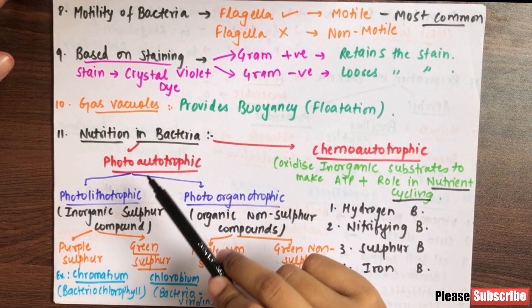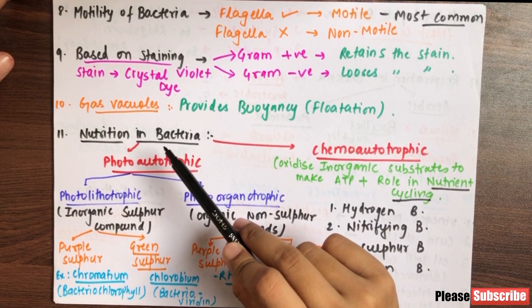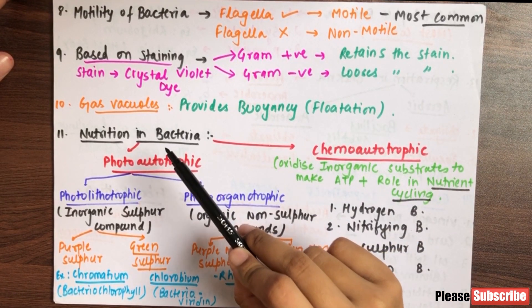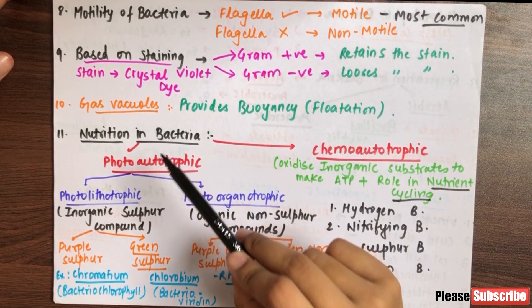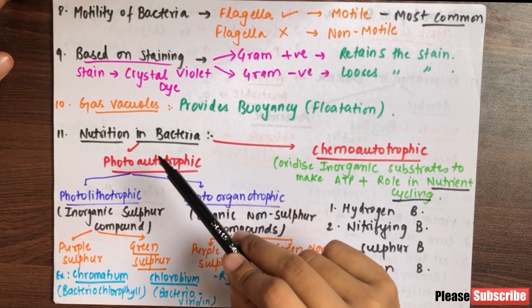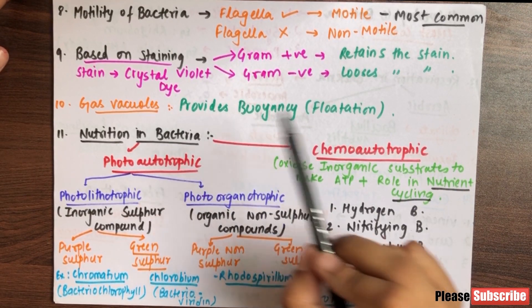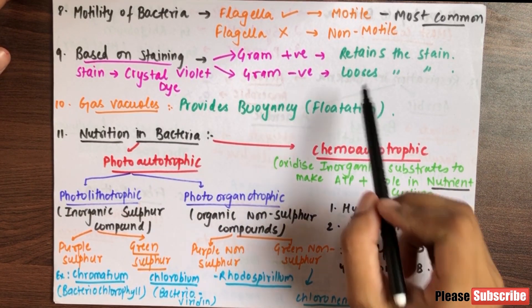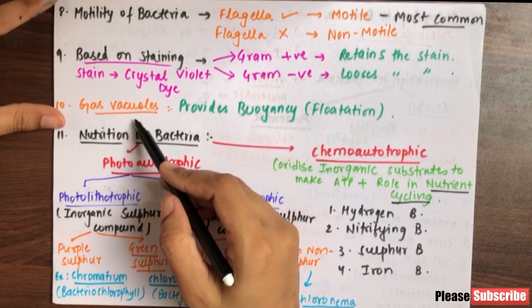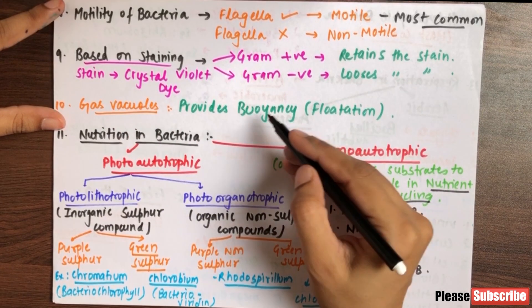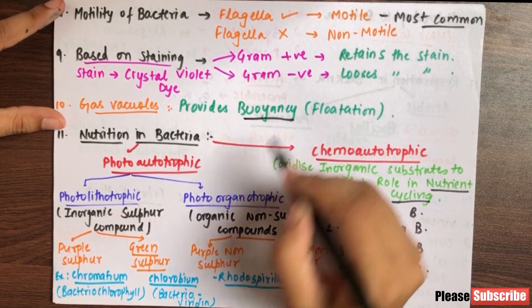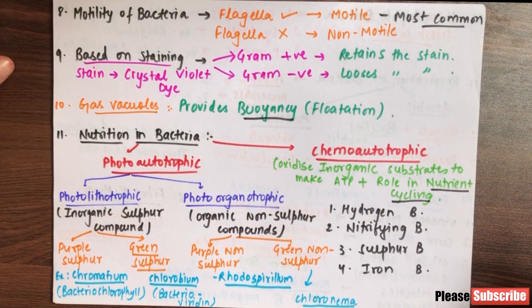Bacteria do not have sap vacuoles like plants. Instead, they have gas vacuoles. Bacteria always have gas vacuoles, which provide buoyancy — they help bacteria float in water.